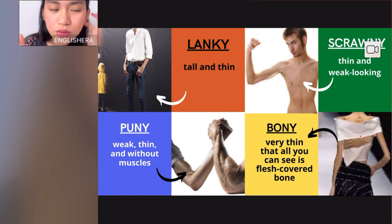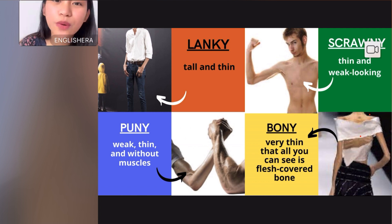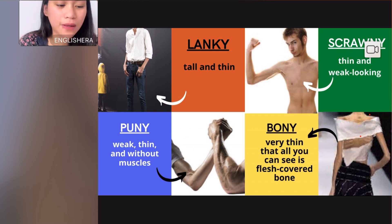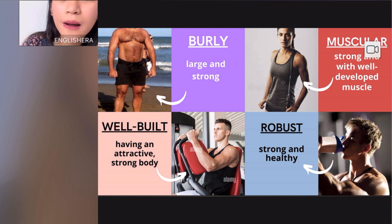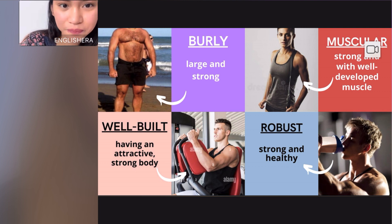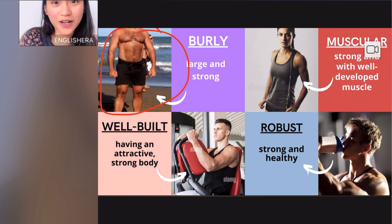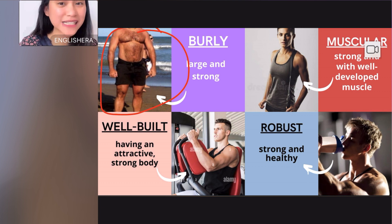These words can be used to describe someone's thin appearance. Take a screenshot or write them down and practice — they are advanced English vocabulary you might encounter when reading or listening to native speakers. Now we also describe a person who is strong in appearance. The first word is 'burly' — the person is large and strong, like a big buddy or uncle type. A burly body is large and strong.